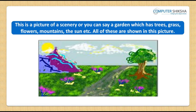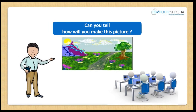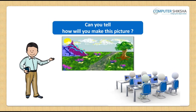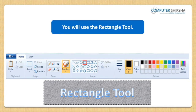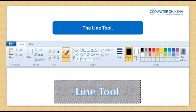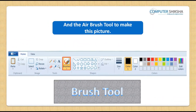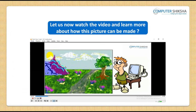Look at this picture being shown to you. This is a picture of a scenery, or you can say a garden, which has trees, grass, flowers, mountains, the sun, etc. — all of these are shown in this picture. Can you tell how you will make this picture? You will use the rectangle tool, the line tool, and the airbrush tool to make this picture. Let us now watch the video and learn more about how this picture can be made.